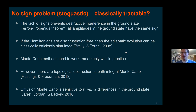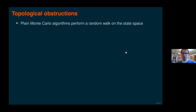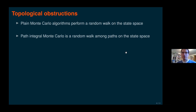So there is some general hope that the no-sign-problem case is classically tractable, but there are also problems with Monte Carlo methods. What is the power of adiabatic evolution with no sign problem? Let me explain a little more about the topological obstructions that Hastings and Freedman discovered, as they are relevant for our construction. A normal Monte Carlo algorithm does a random walk on state space; path integral Monte Carlo is abstractly a random walk among paths.